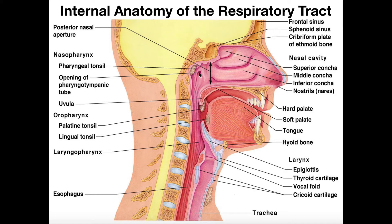That leads us to the three regions of the pharynx. We have the superior part, which is the nasopharynx; the middle part, which is the oropharynx; and the most inferior is the laryngopharynx. The nasopharynx is the section of the pharynx that lies behind the internal nostril, or really behind the whole nasal cavity. The oropharynx, oro for oral, is behind the oral cavity.